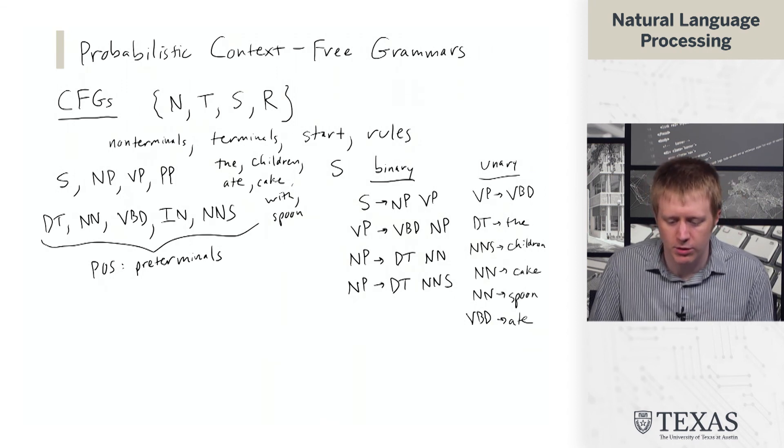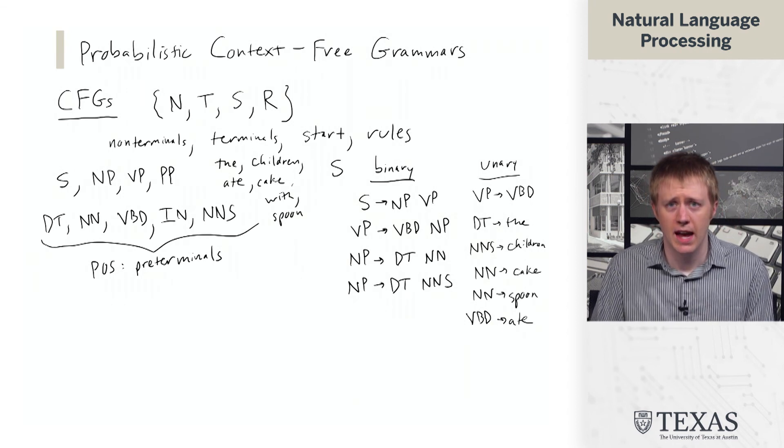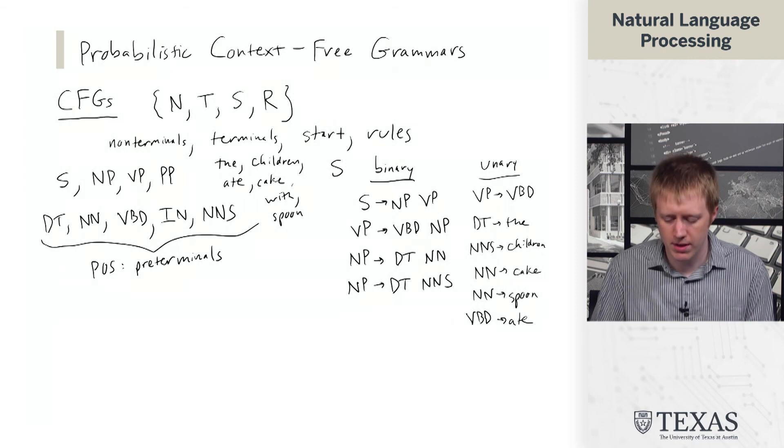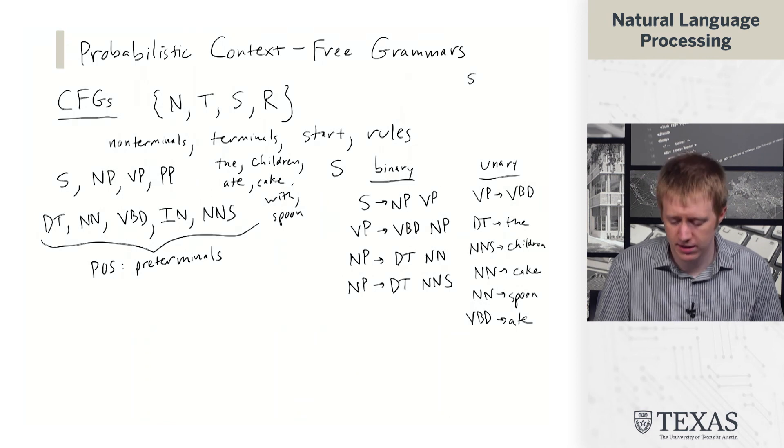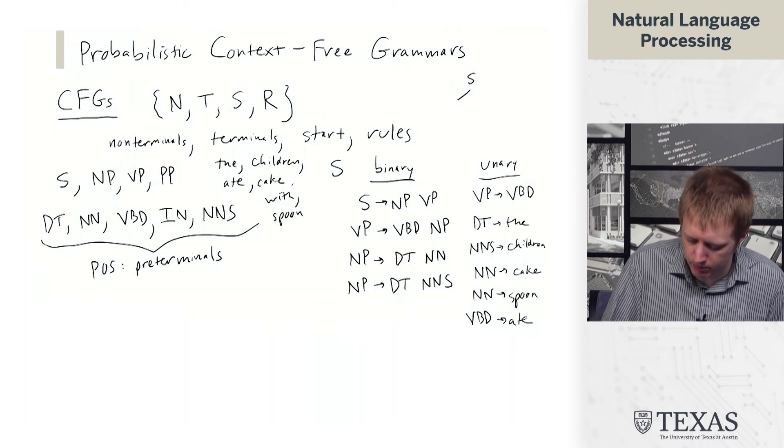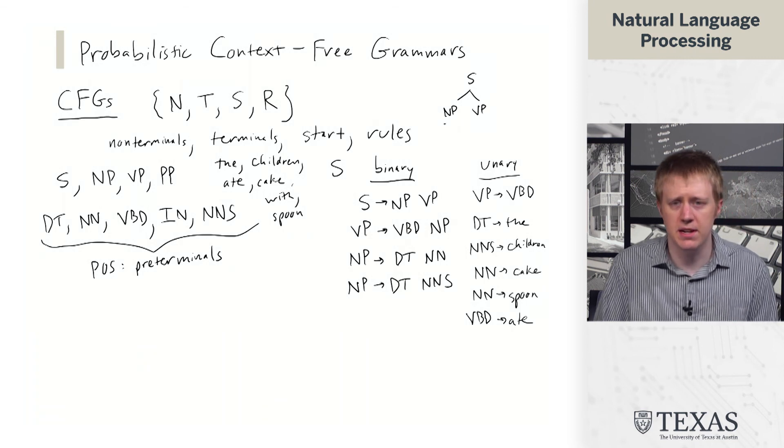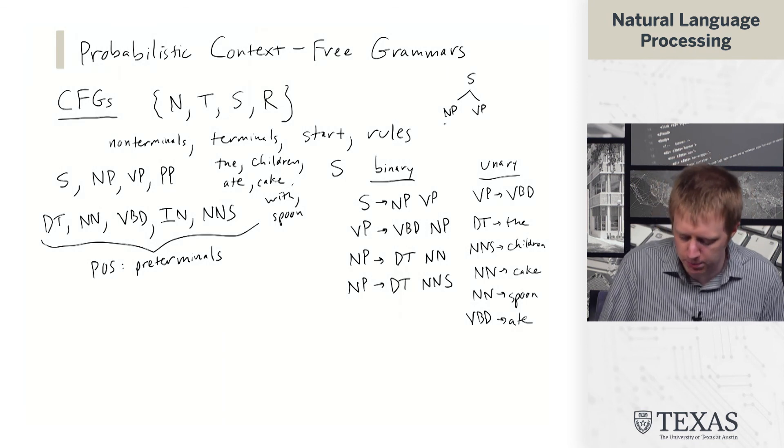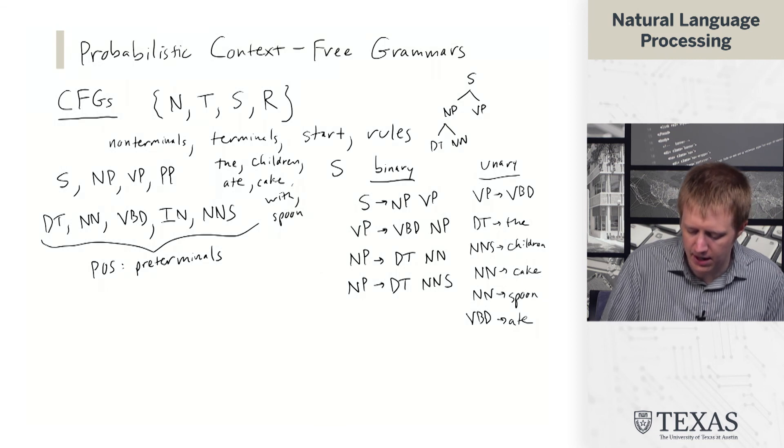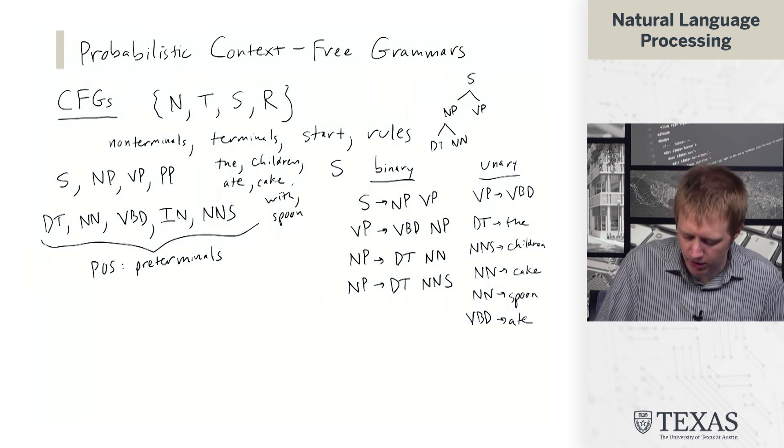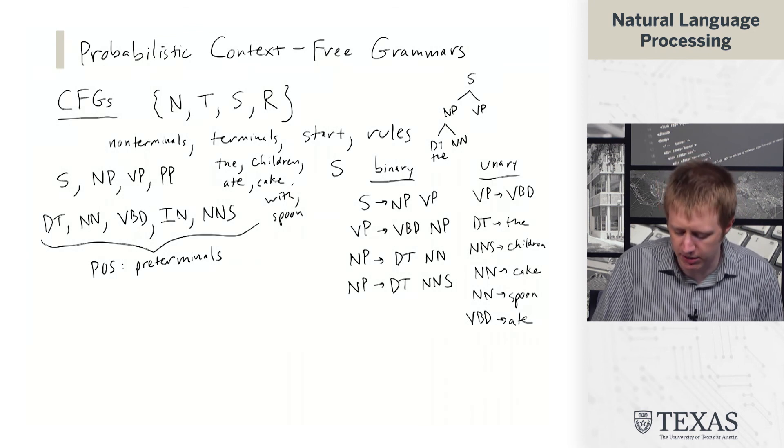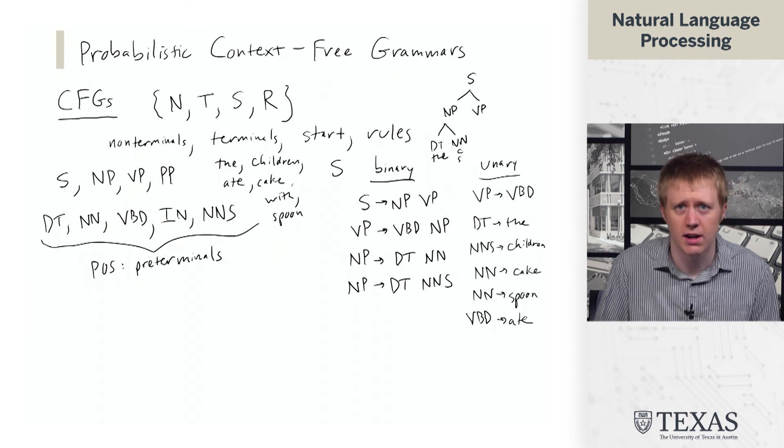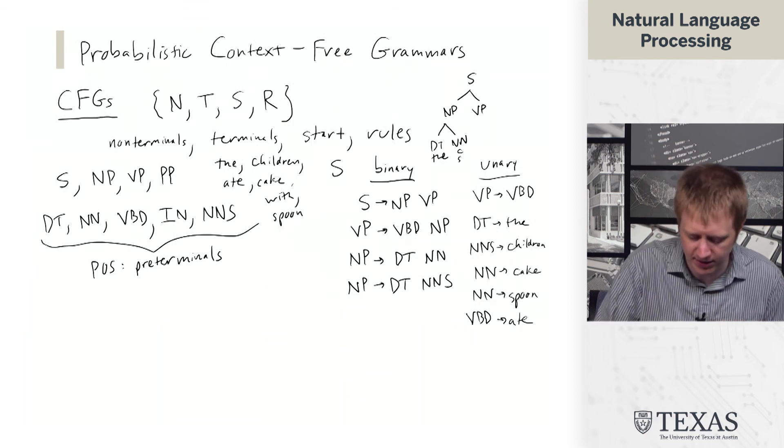So we've got a grammar here. What we can do is start with the start symbol S and iteratively apply these rules. Maybe our only option is to rewrite as NP VP. Then for this NP, we decide what rule to apply, maybe DT NN. Then we can get 'the' from DT, and either cake or spoon. We can generate a sentence this way.